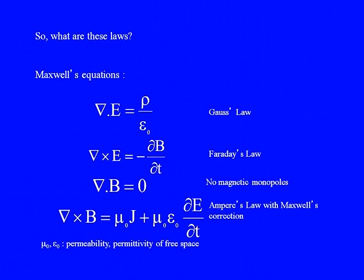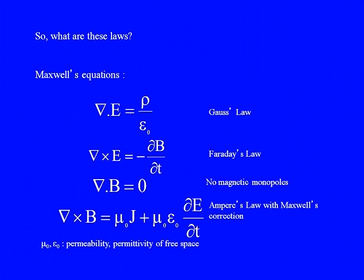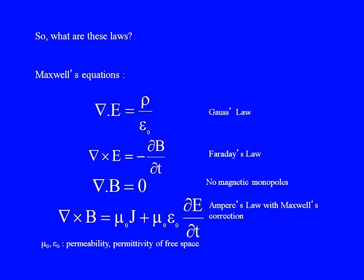For that, let's see what those laws are. The basic laws are encapsulated in Maxwell's equations. Divergence of E equals rho by epsilon-zero, where E is electric field, rho is charge density, and epsilon-zero is the permittivity of free space. Curl of E equals minus del B del T, where B is the magnetic field. Divergence of B equals zero. Curl of B equals mu-zero J plus mu-zero epsilon-zero del E del T.